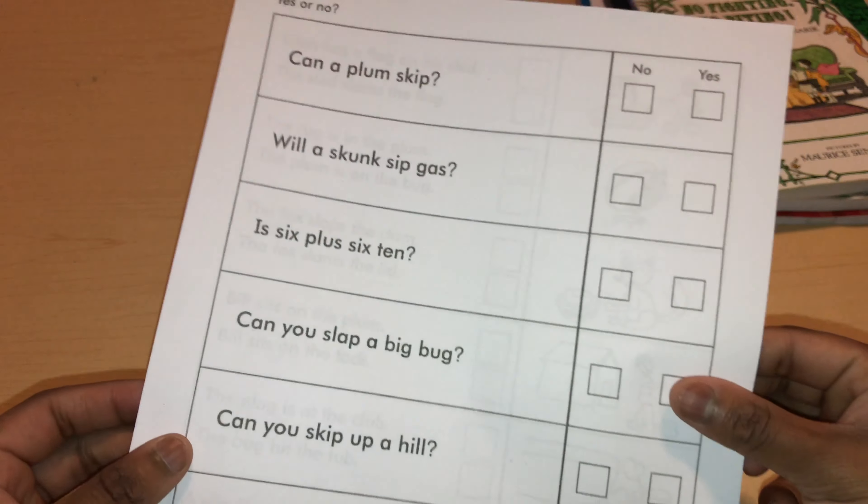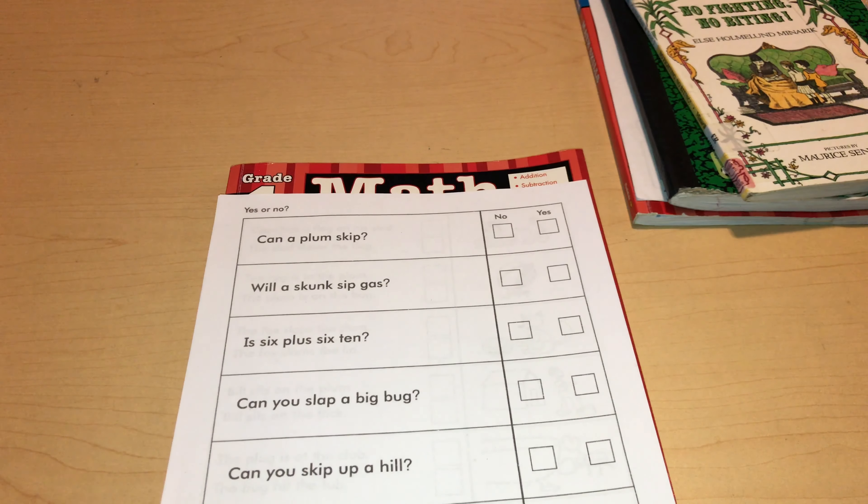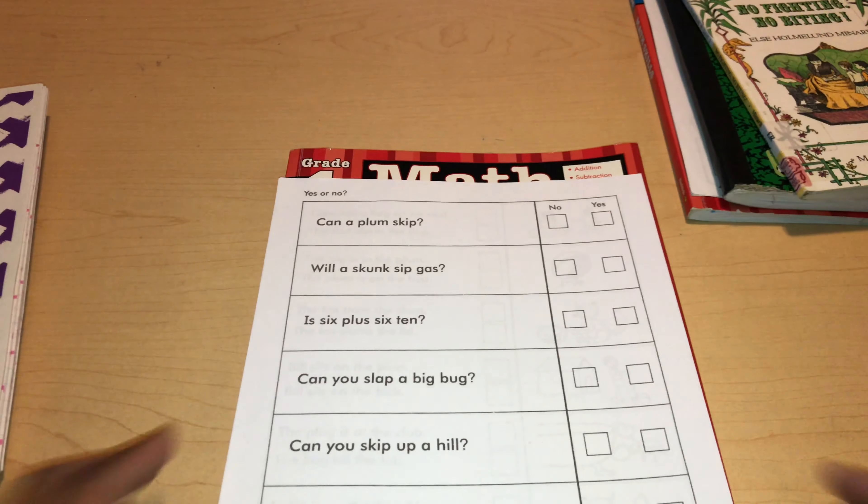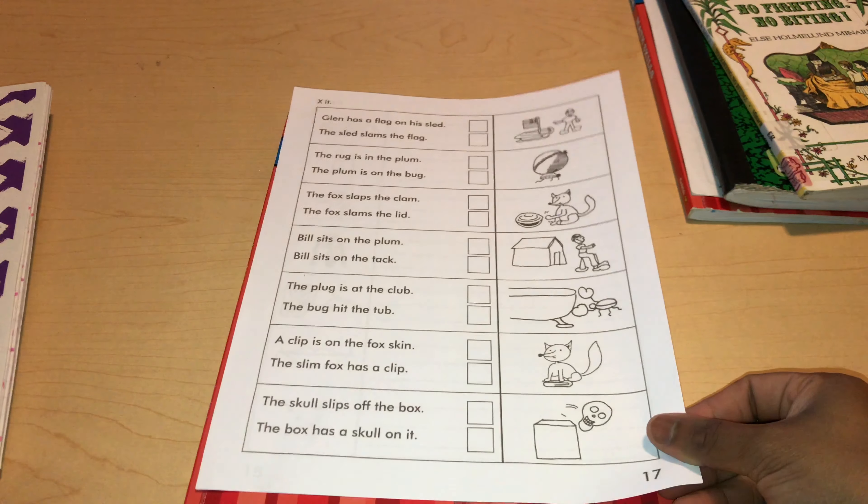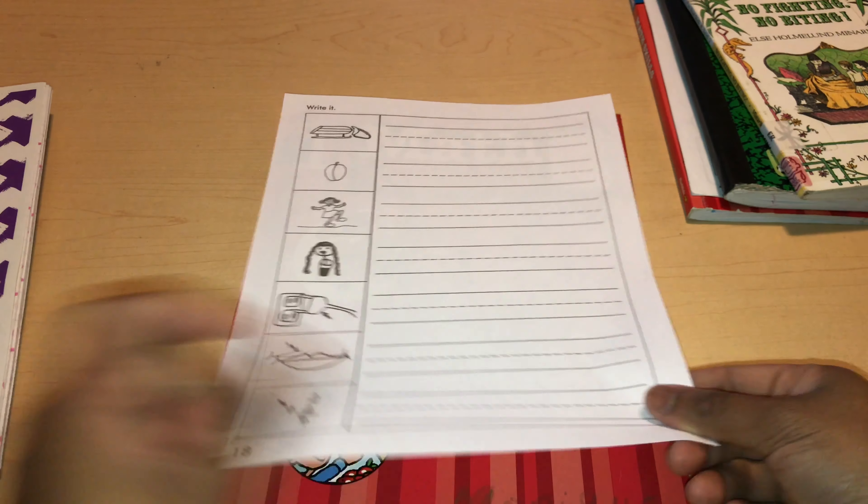Then she will be doing three pages from the Explode the Code book two, and I'll show you the pages. So this is page number one, number two, and number three.